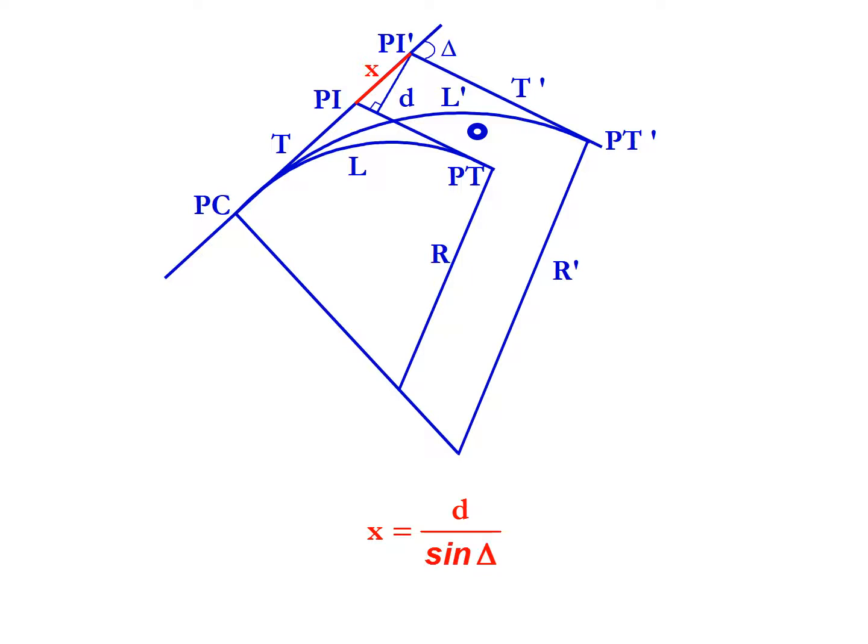x is equal to the distance d divided by the sine of delta. T prime, the new tangent length, is the old tangent length T plus x.